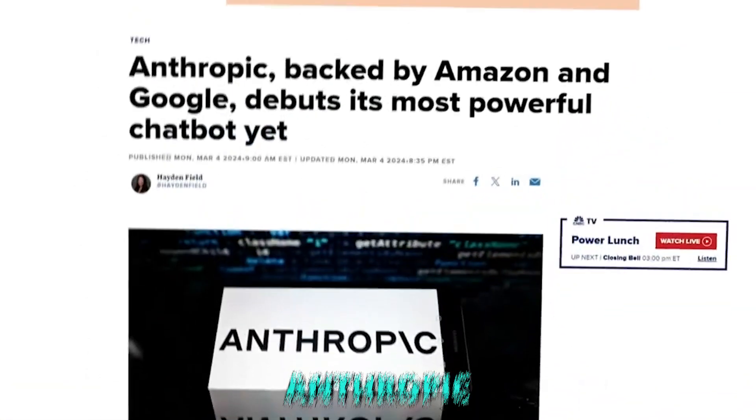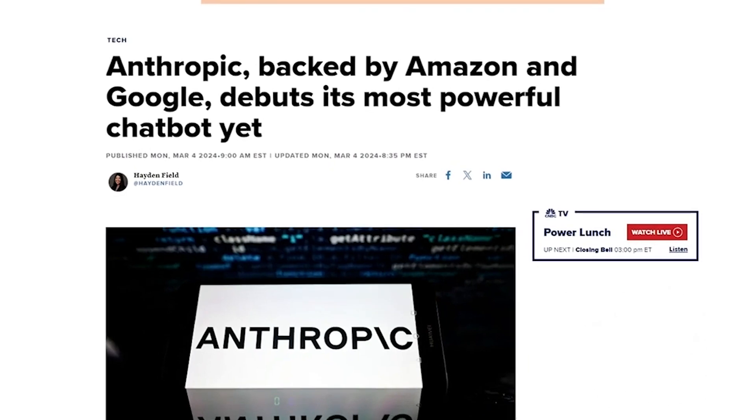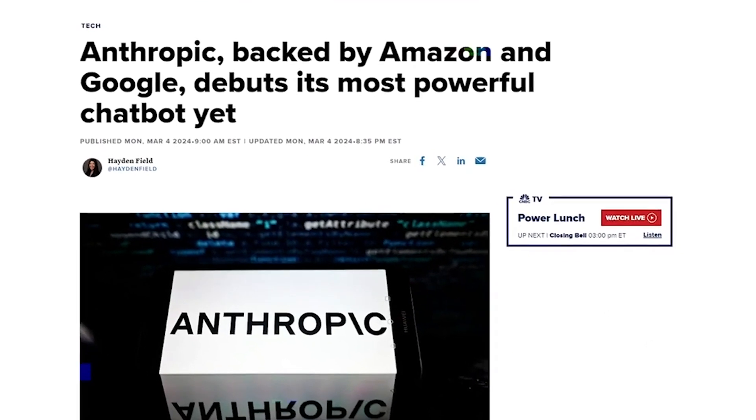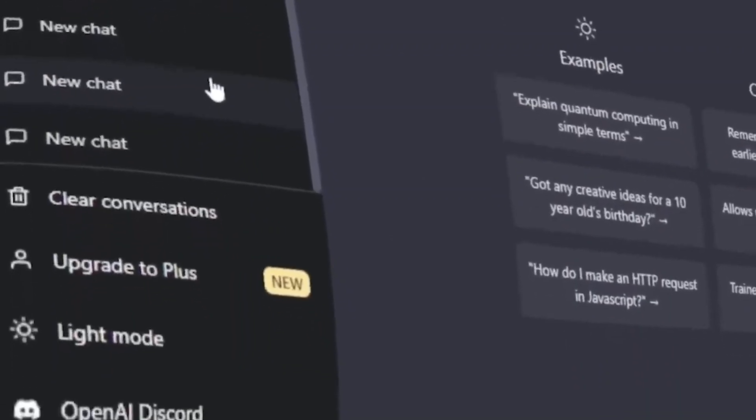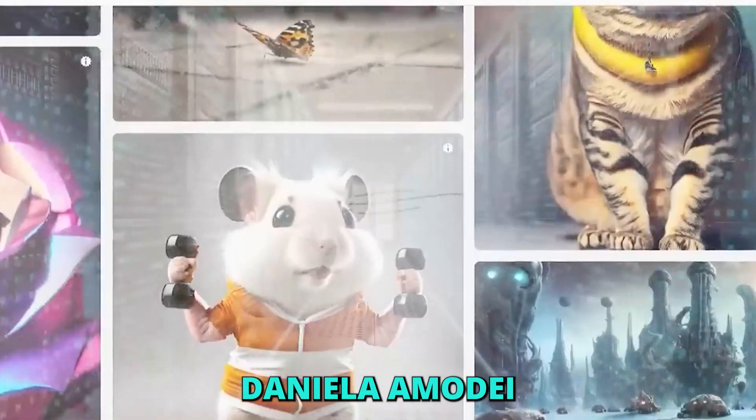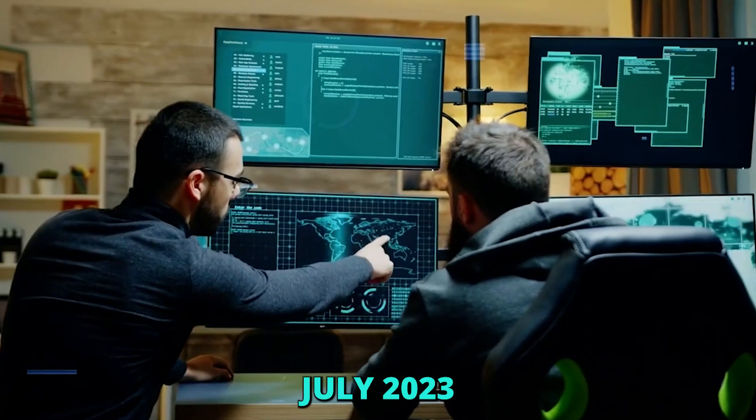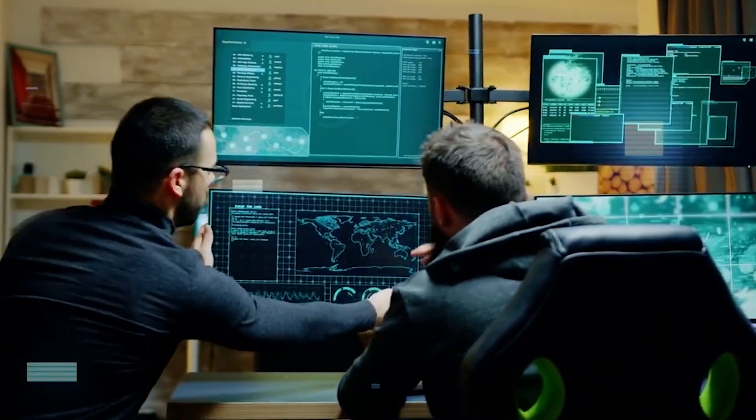Ever heard of Anthropic? Discover the startup revolutionizing the world of AI. Anthropic is an American artificial intelligence startup founded in 2021 by former members of OpenAI, including siblings Daniele Amodei and Dario Amodei. The company is based in San Francisco, California, and as of July 2023, it had 160 employees.